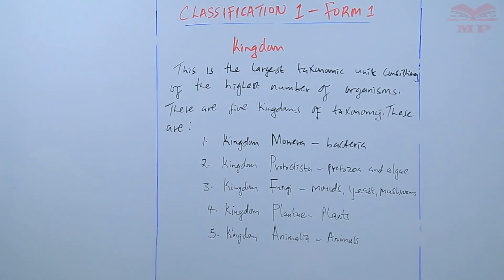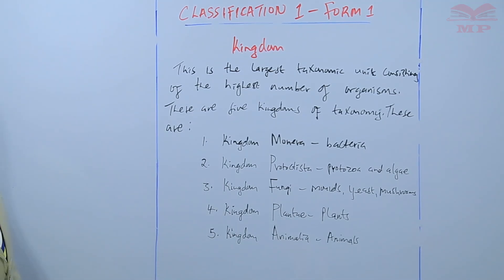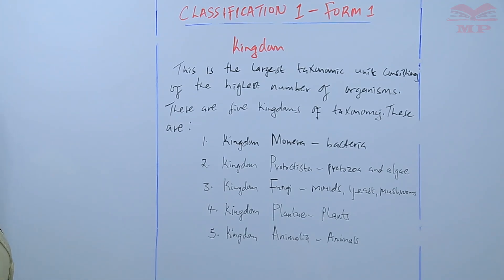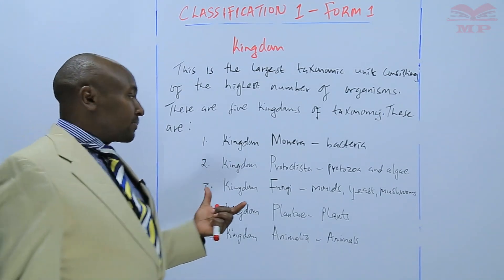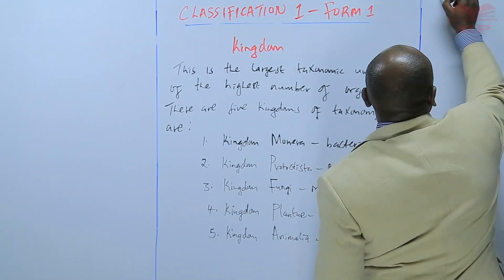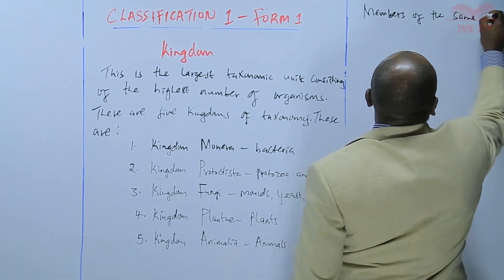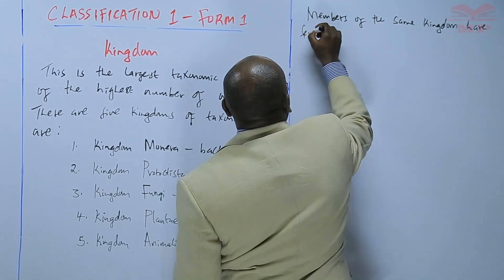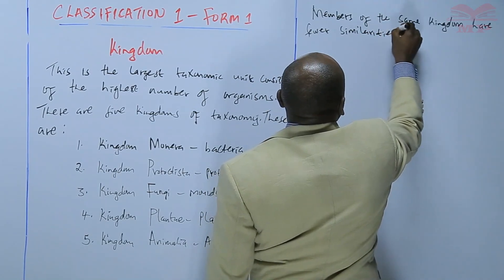So we are saying that the kingdom is the largest taxonomic unit and it has the highest number of organisms. Members of the same kingdom do not share very many characteristics between them — members of the same kingdom have fewer similarities in characteristics.